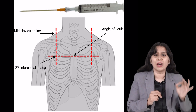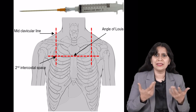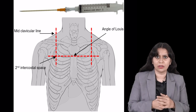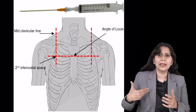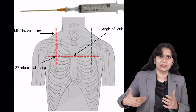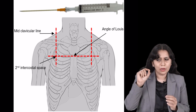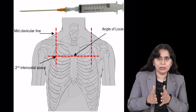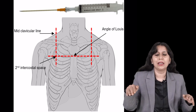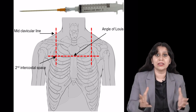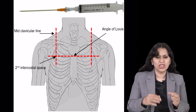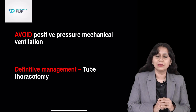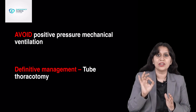You will see an immediate relief. The easiest space is the mid-clavicular line, second intercostal space. But we can also go in the anterior axillary line, fourth or fifth intercostal space, whatever is convenient. We put a needle in the pleura and open it to the atmosphere, so the pleural pressure and atmospheric pressure become equal. Immediately the pressure on the mediastinal structures and the lung is relieved. So once the patient is relieved, we have to do the definitive management, which is insertion of a chest tube.